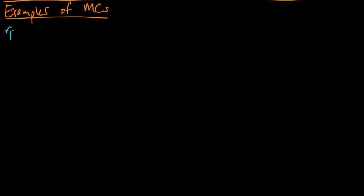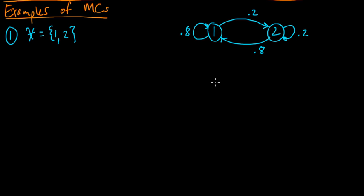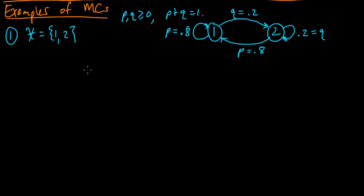Now let's look at some simple Markov chains. Let's take the simplest possible example with just two states. We have state one and state two, with some transition probabilities between each possible pair. Let's say it goes from one to two with probability Q, and one to one with probability P, two to two with probability Q, and two to one with probability P. In general we could have any P and Q that are non-negative and sum to one.